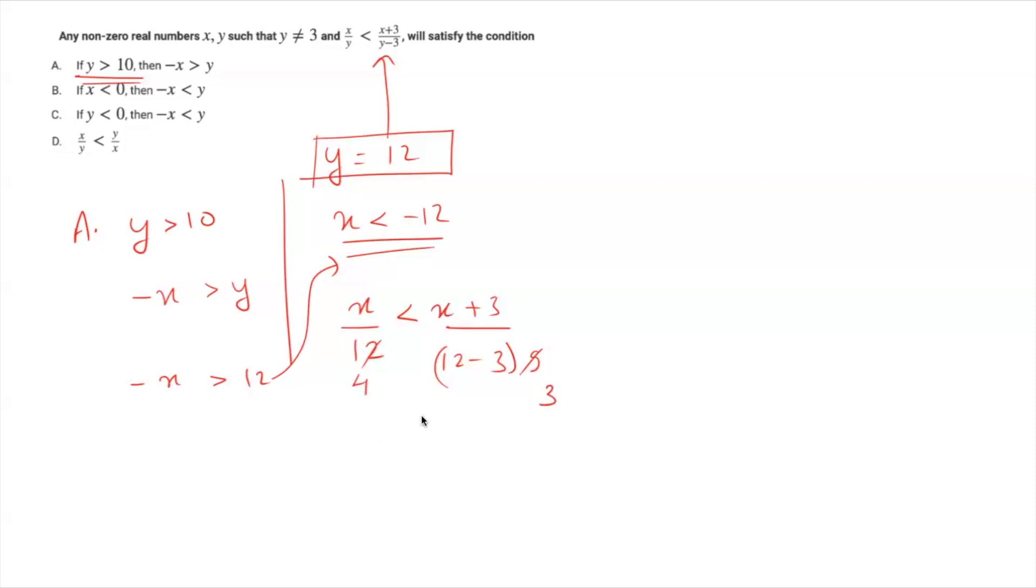Next step is we'll cross multiply. So, 3 into x will come here. 3 into x and 4 into x plus 3 will be 4x plus 12.